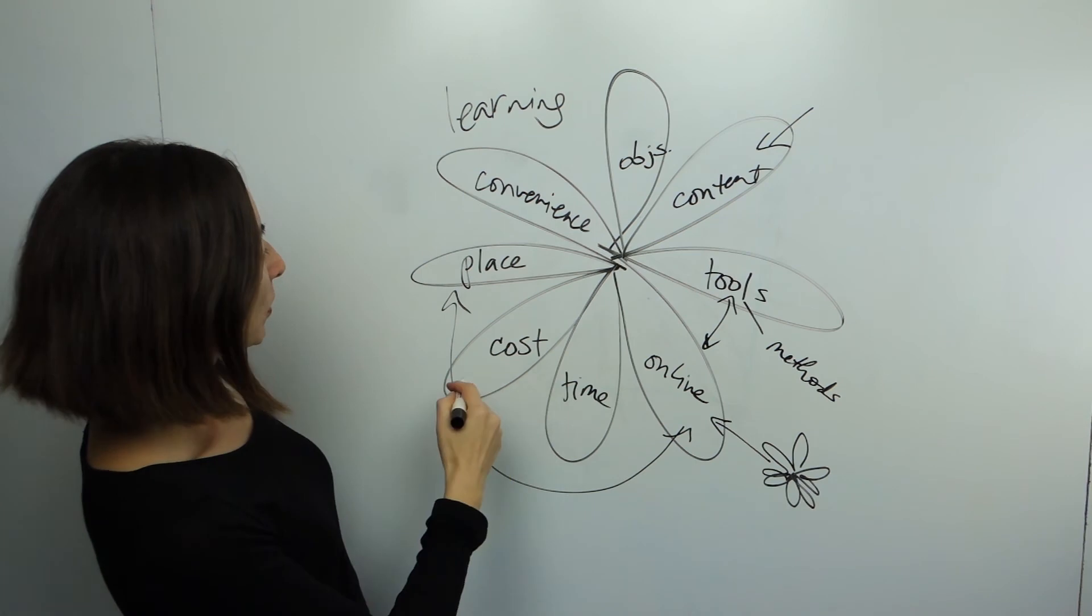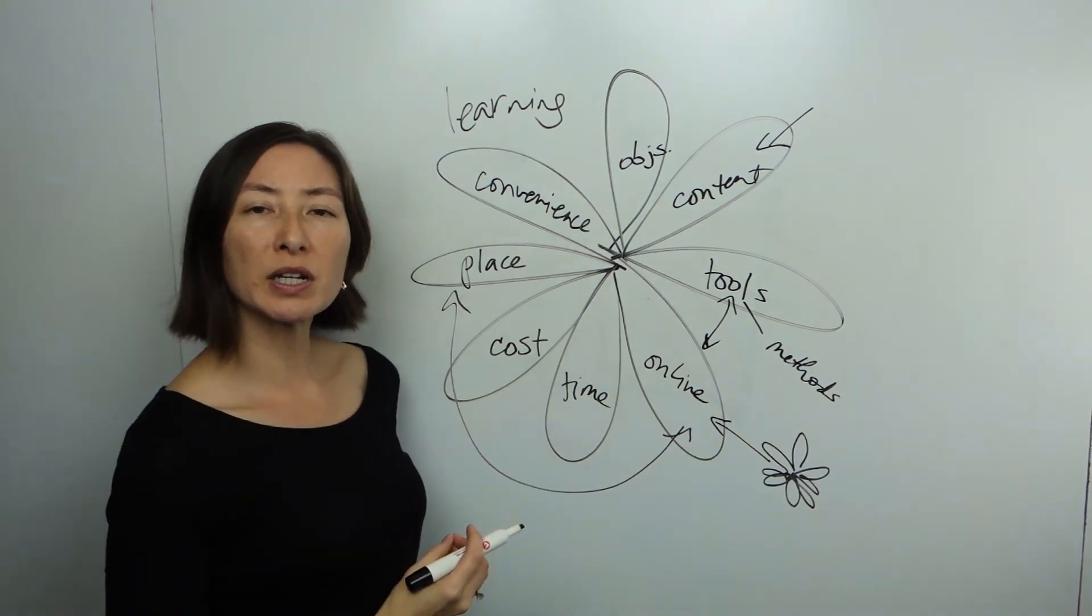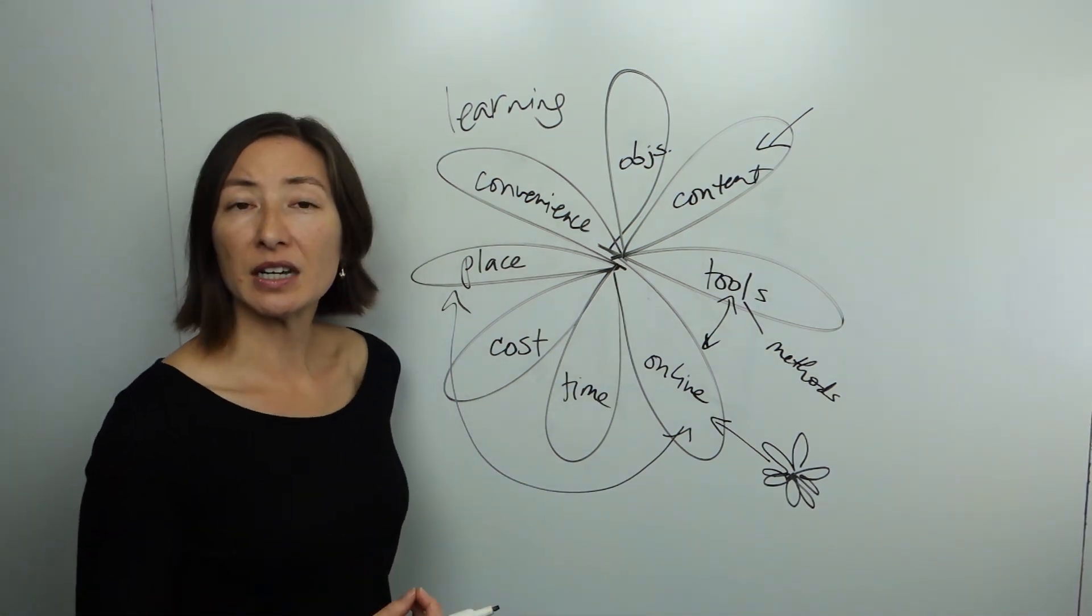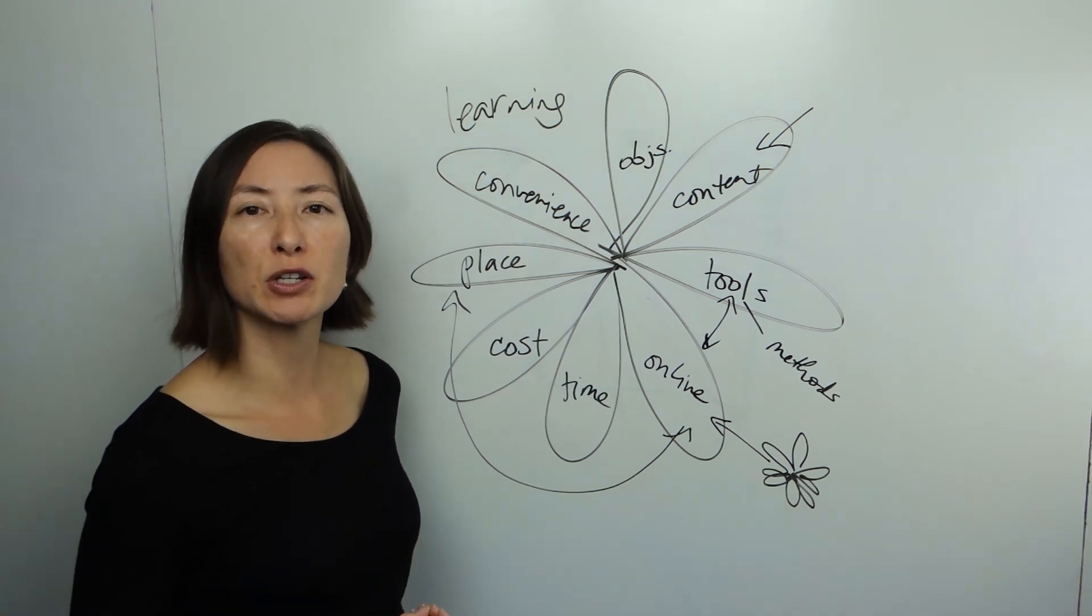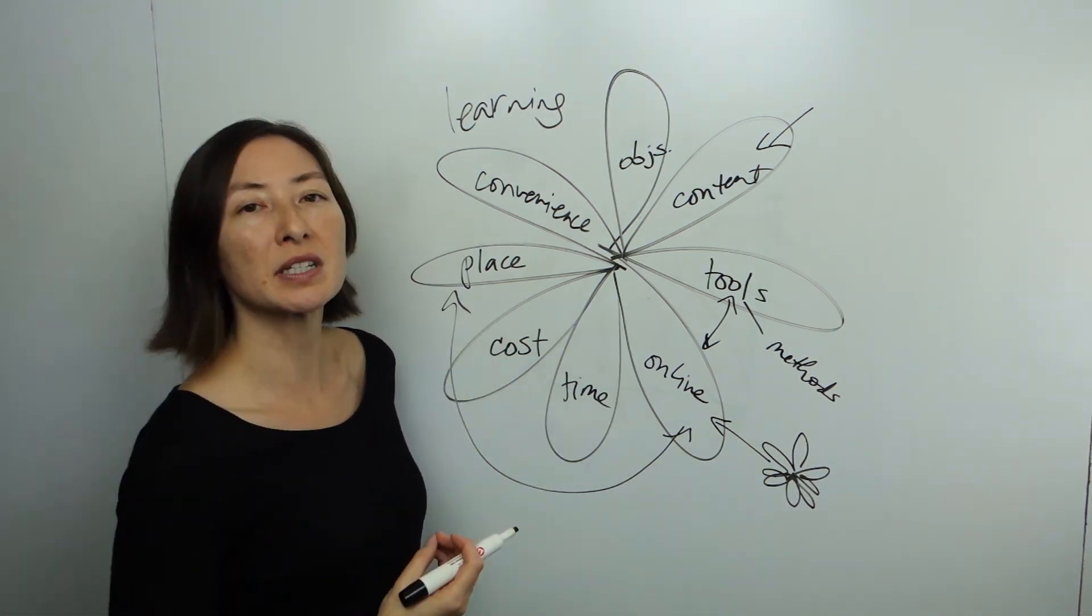And then you might say, well you know what, we actually are missing some. Or deliberately you can leave one of the eight empty and have that as an invitation for somebody outside your group to say, what would you add? What is missing?